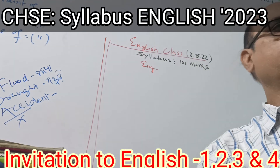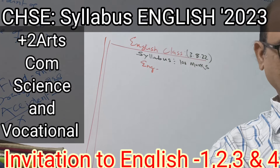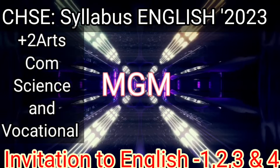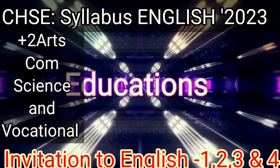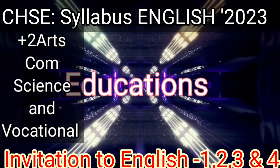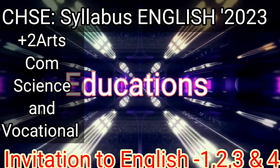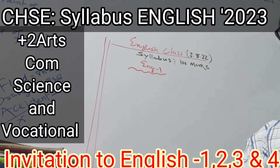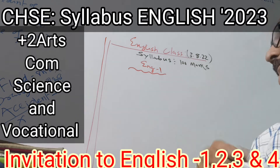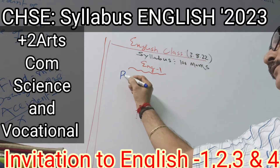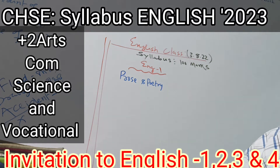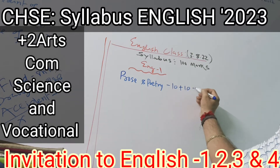Students, welcome to the class today. Now look, hundred marks English — English 1. English 1 has prose and poetry. Prose and poetry, plus some marks.